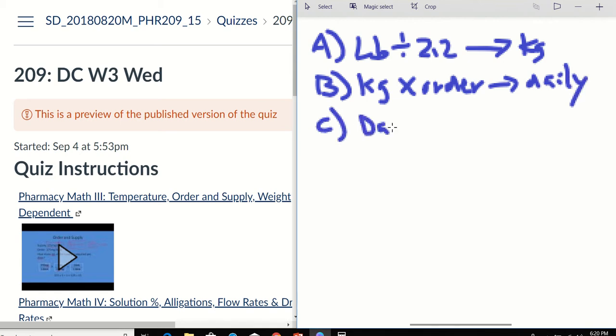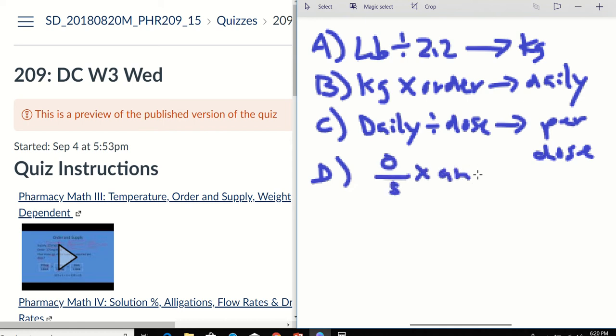And then once you get the daily amount, you may need to divide by some doses. That's going to give you the per dose amount. That's your order per dose. So your last step is just an order and supply problem.